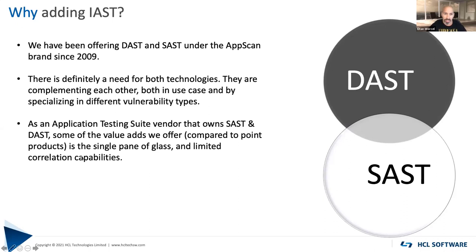One of the values that application security testing suites have is that they give you a single pane of glass to see all the results. And to some degree, that single pane of glass allows you to do correlation — for example, seeing a cross-site scripting issue coming from DAST on a page and also seeing it from SAST, and potentially correlating those issues.